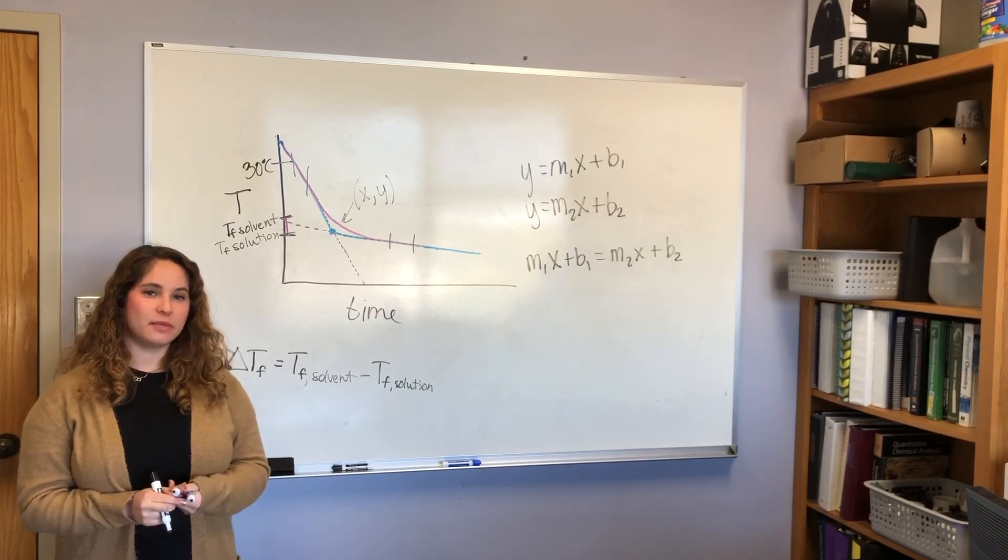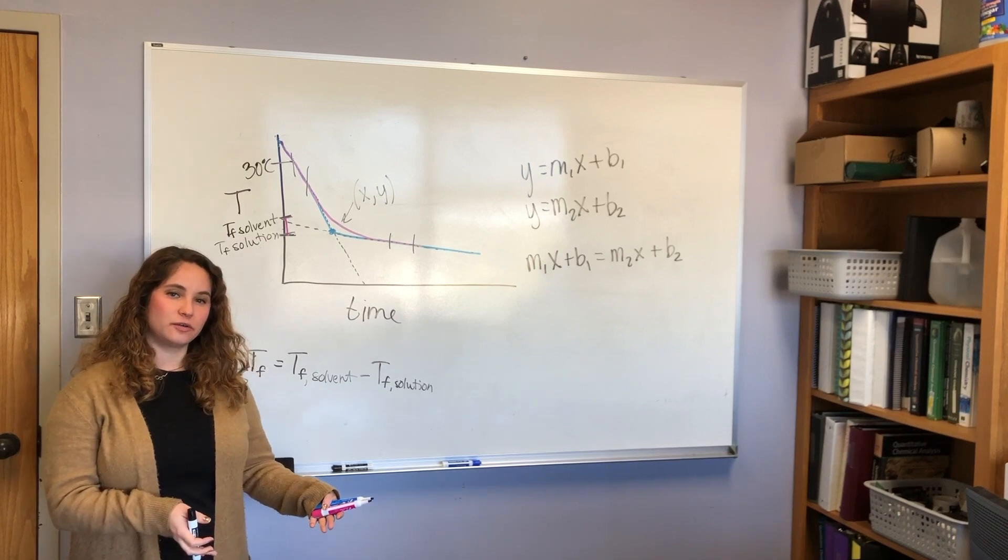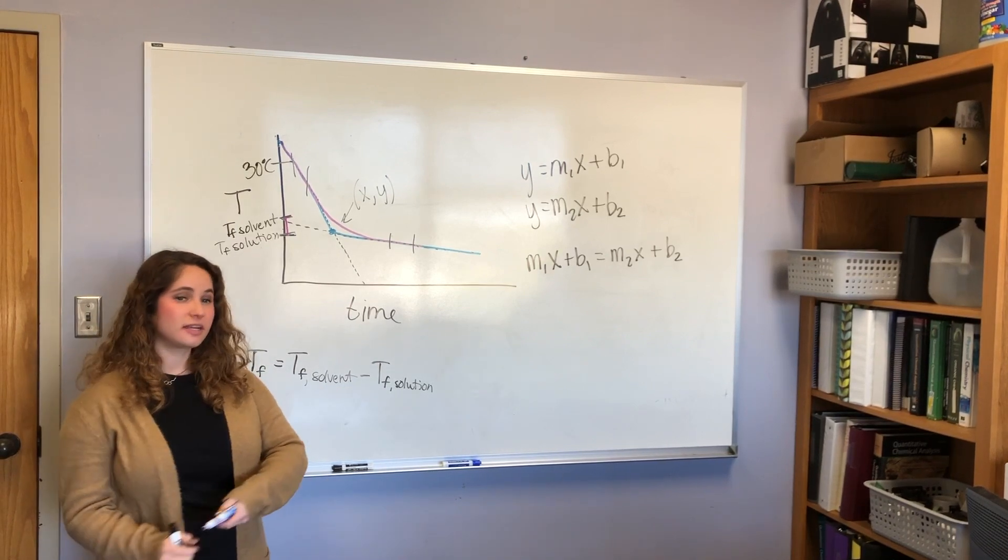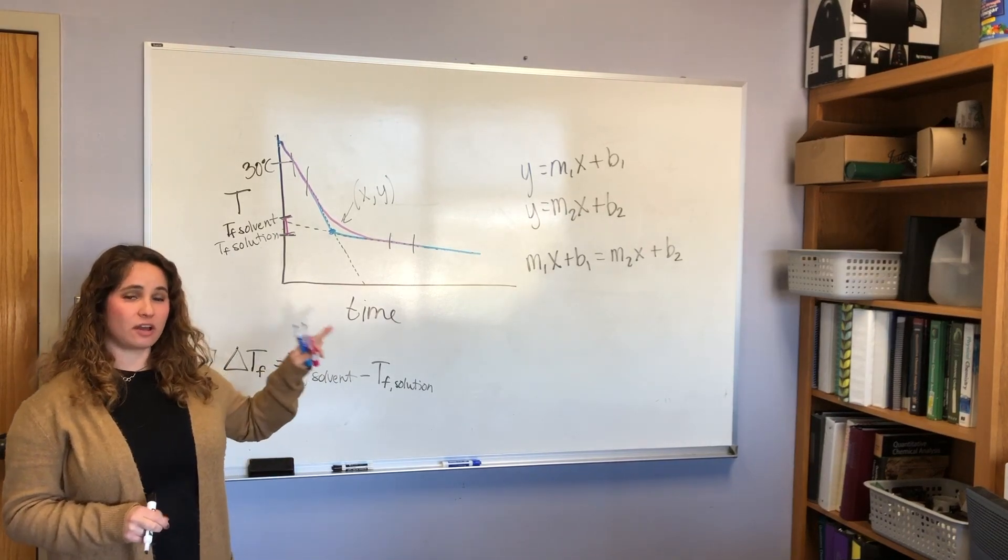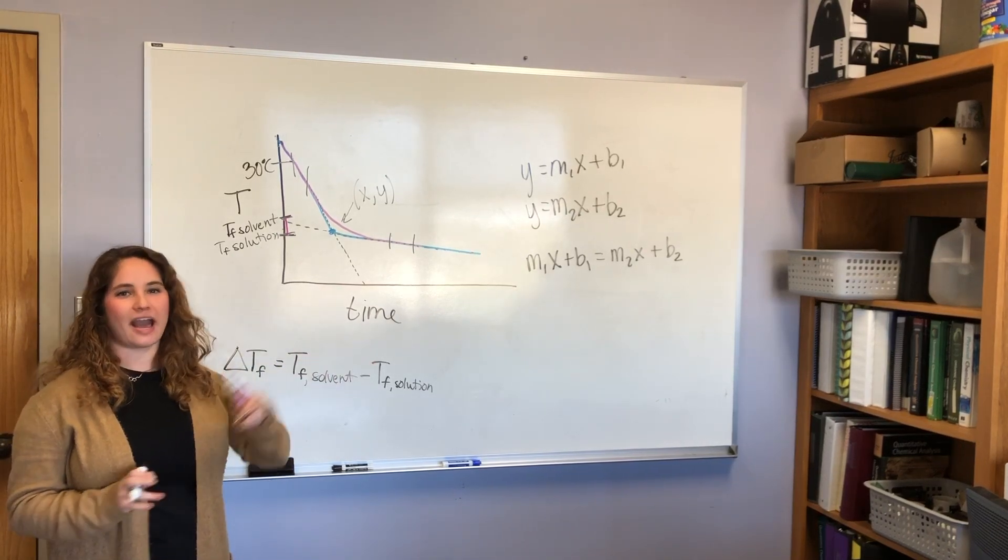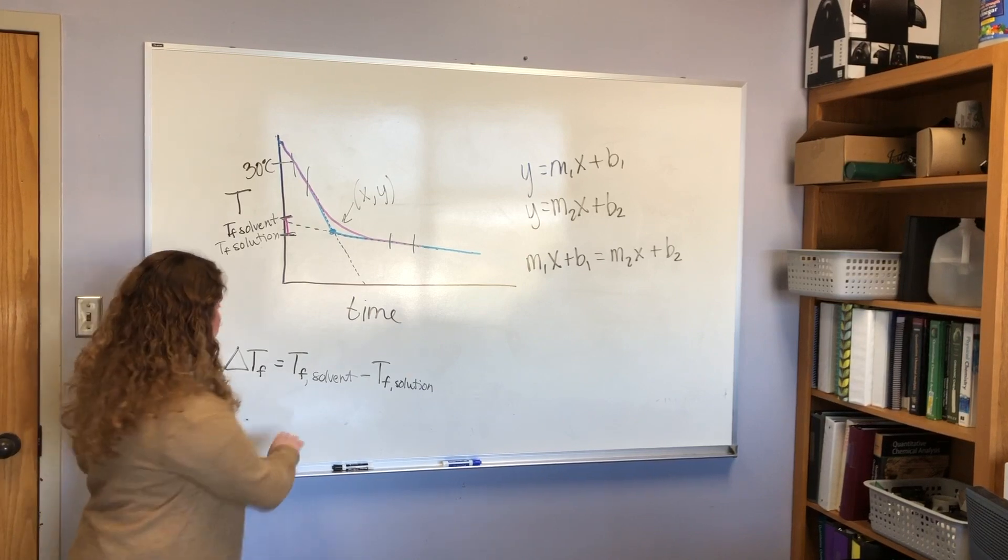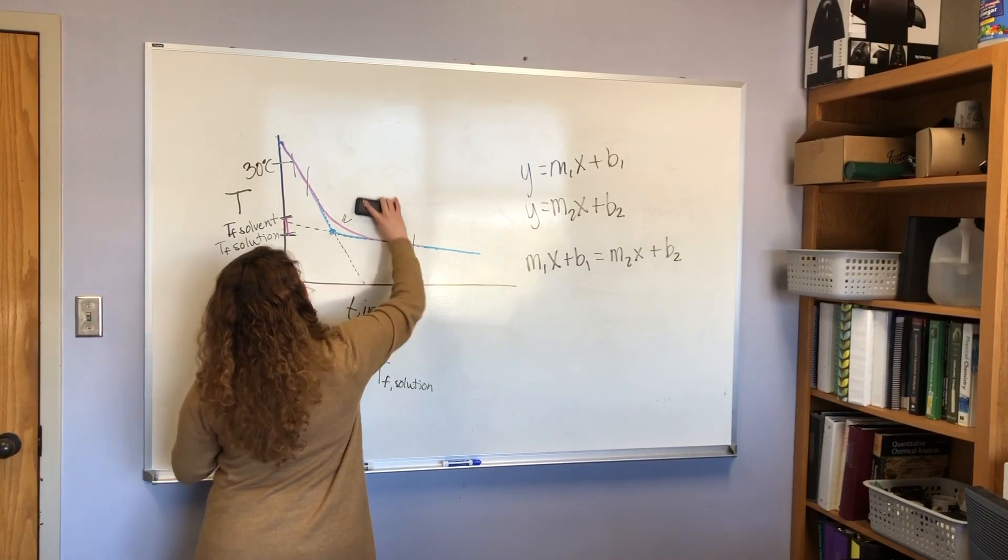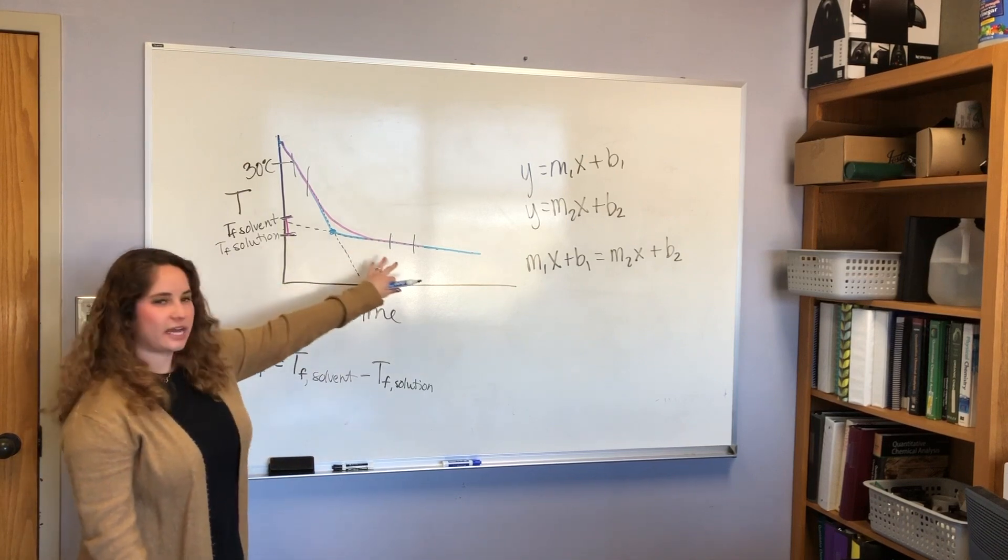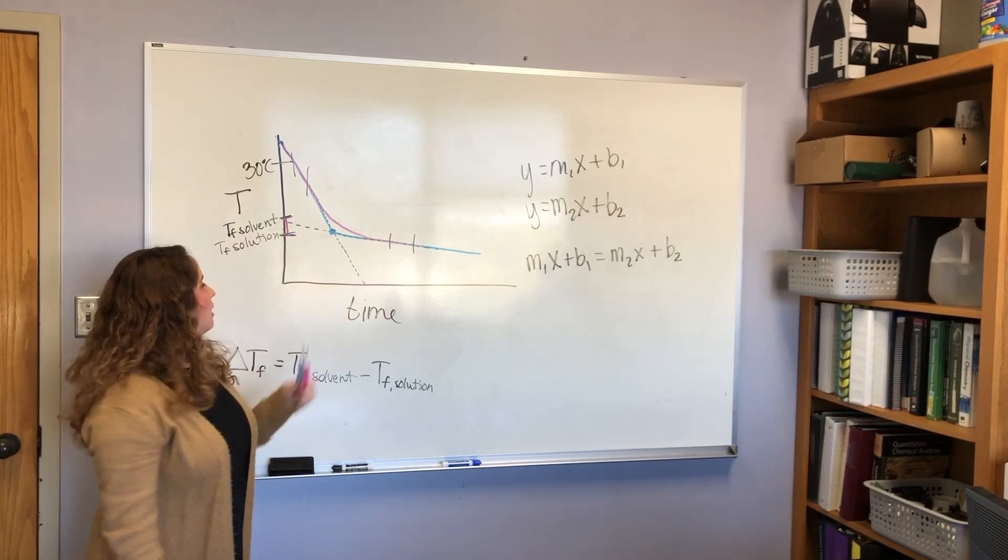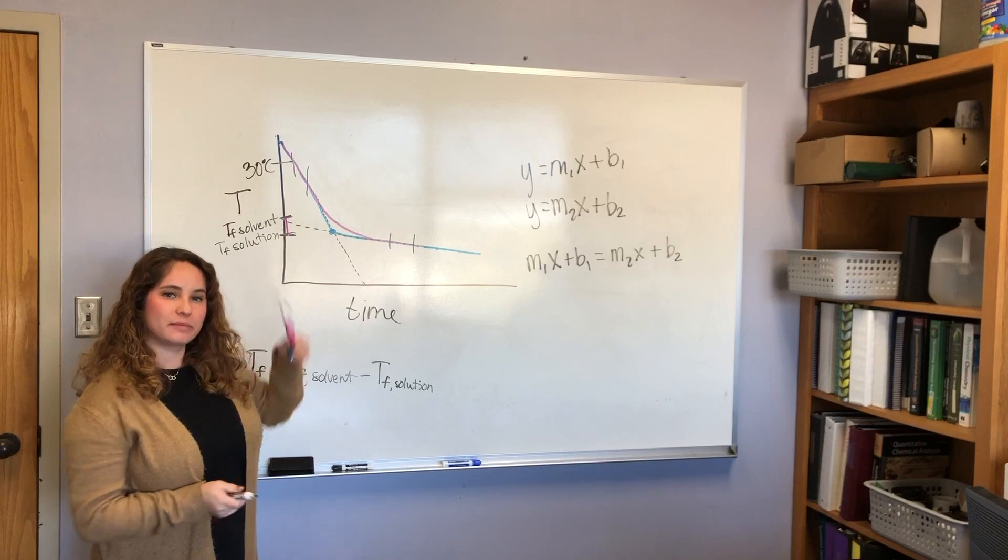So this is where we're at so far with just finding the freezing point. If you've looked at the lab experiment, you know that the ultimate goal is to calculate a molecular weight. Before we move on to that, I want to talk about where students often make really catastrophic mistakes with their data. So looking at our data, we see what the ideal lines of best fit would be.